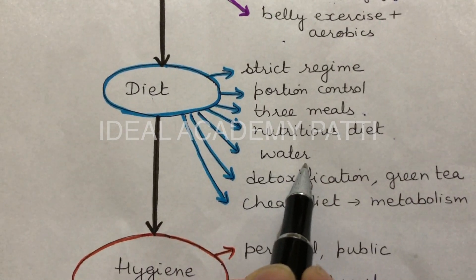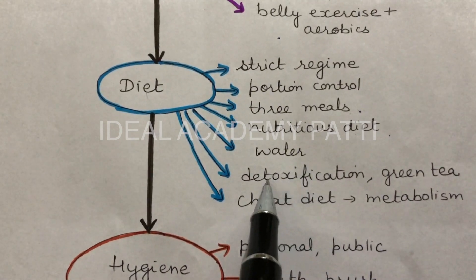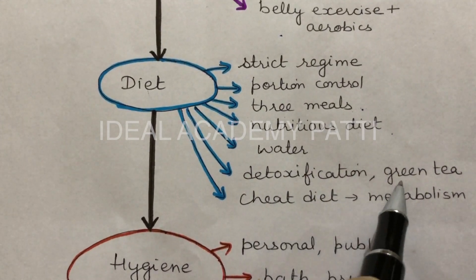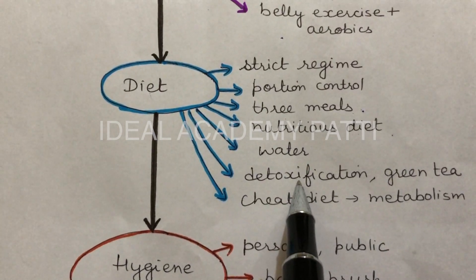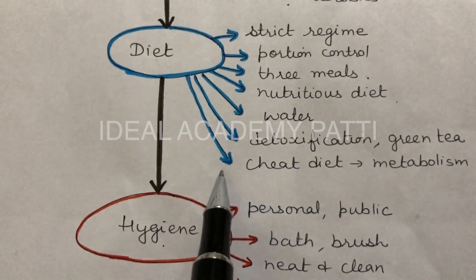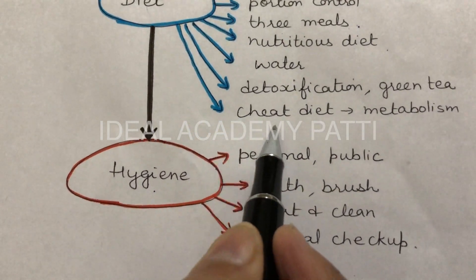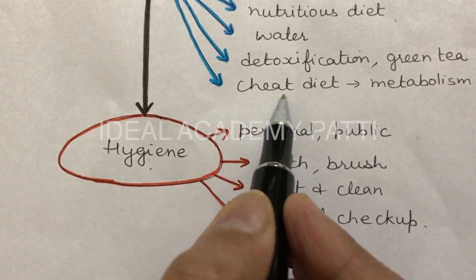I take eight to ten liters of water in a day. I start my day with two glasses of warm water, and for detoxification I prefer to have green tea, sometimes detox water added with cucumber, lemon, and honey, which helps me to get rid of all the toxins from body. Few months ago I read an article about cheat diet.